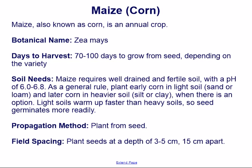Soil needs. Maize requires well-drained and fertile soil with a pH of 6.0 to 6.8. As a general rule, plant early corn in light soil — sand or loam — and later corn in heavier soil — silt or clay. Light soils warm up faster than heavy soils, so seed germinates more readily.